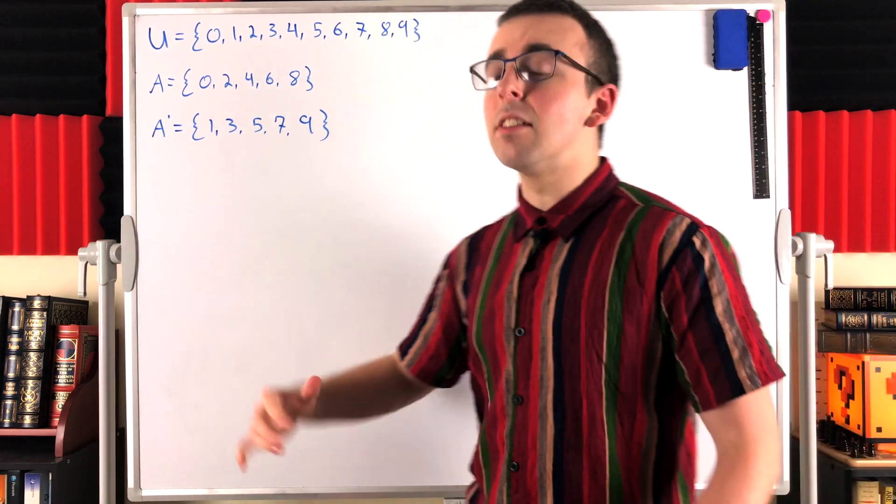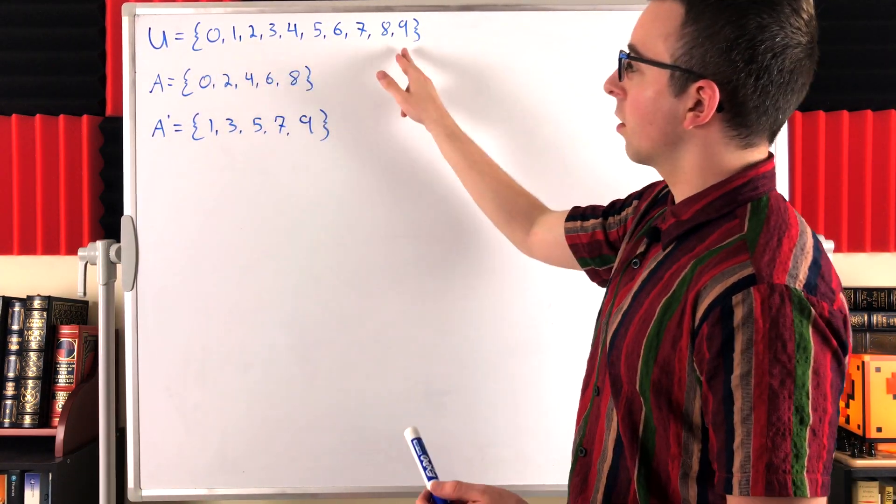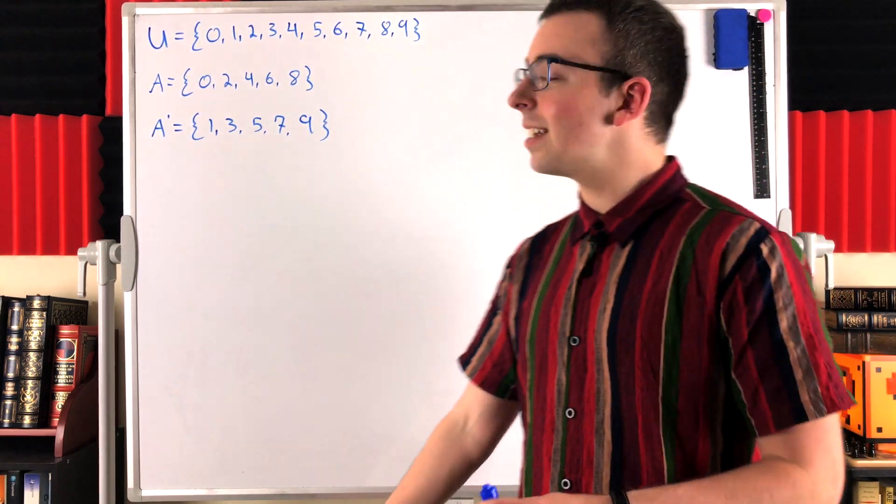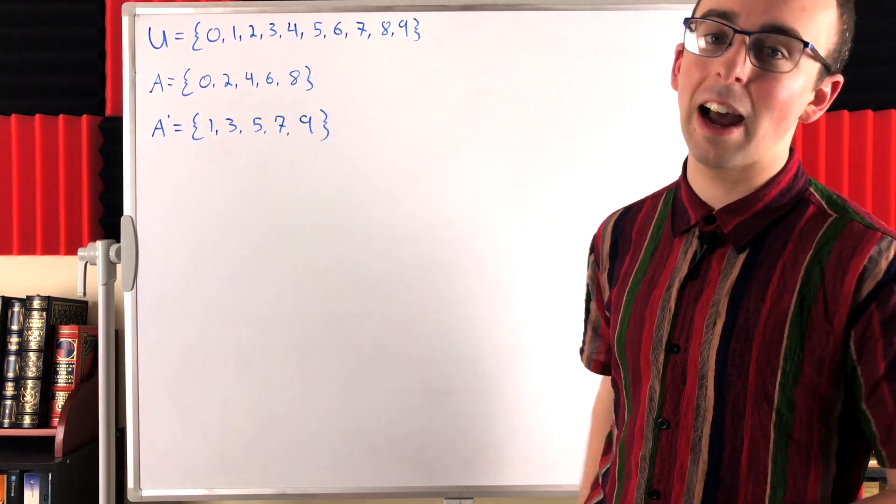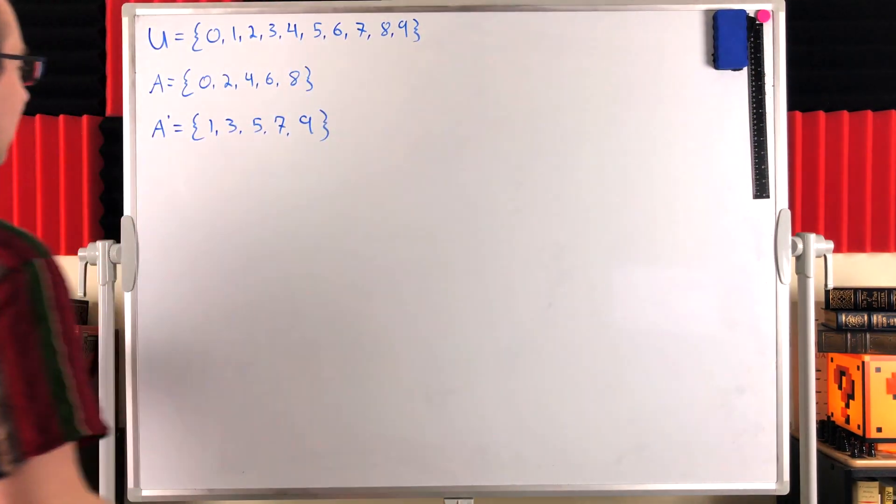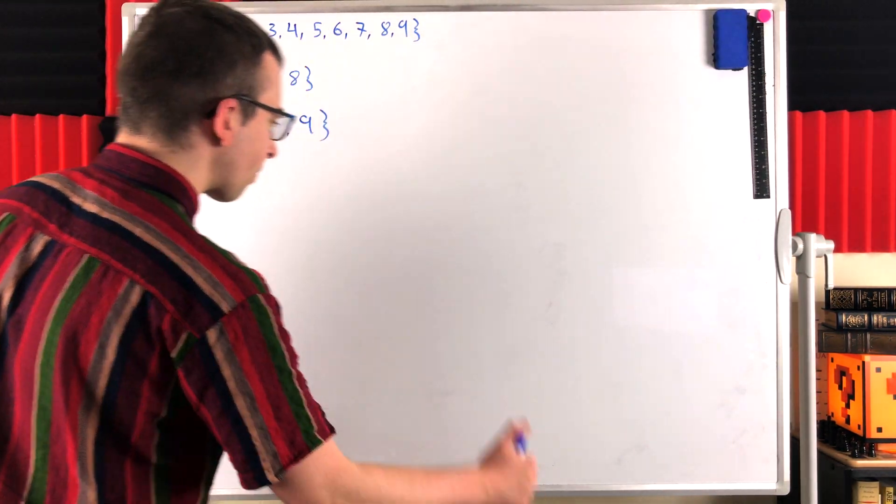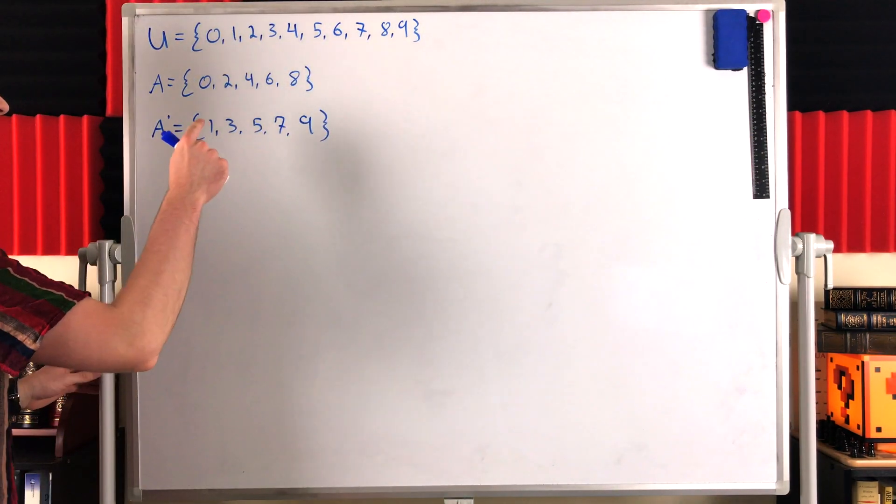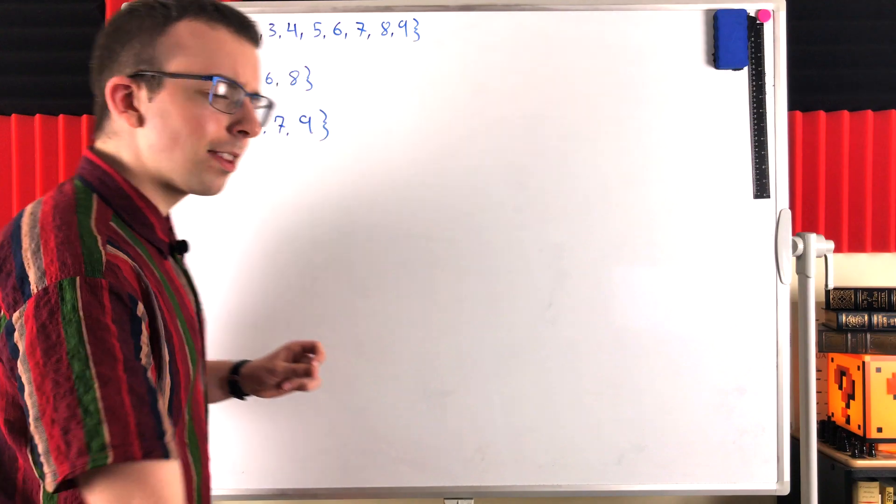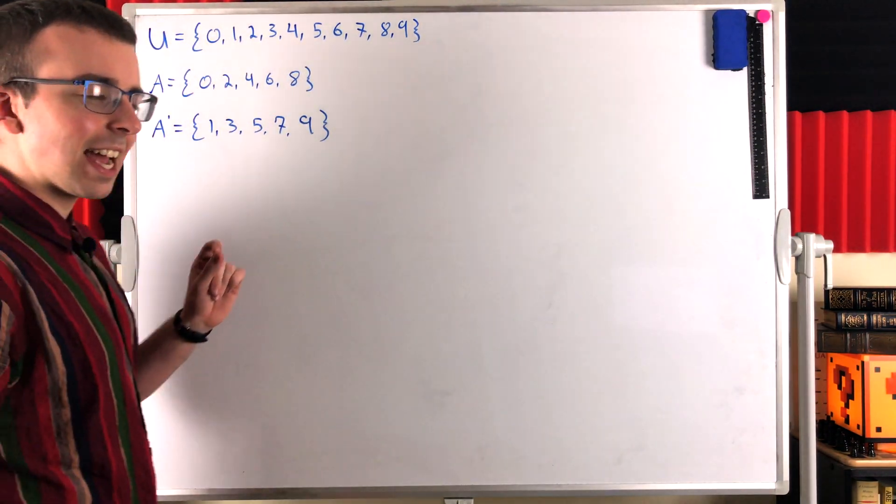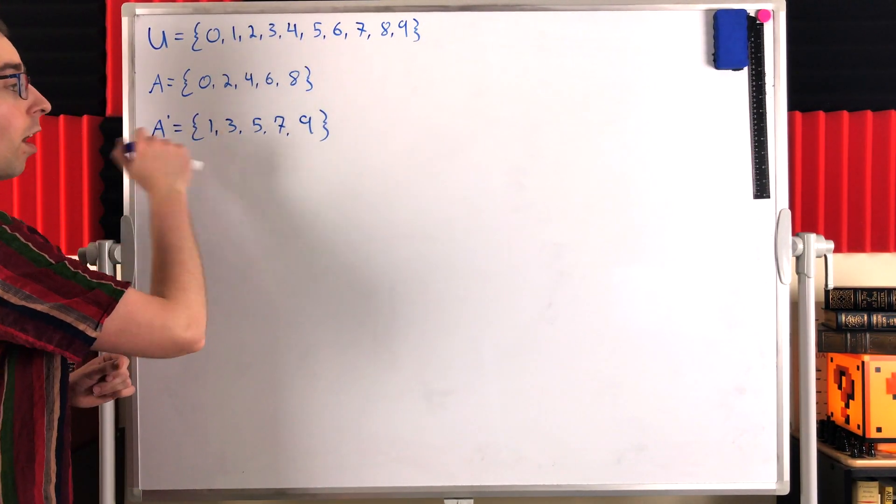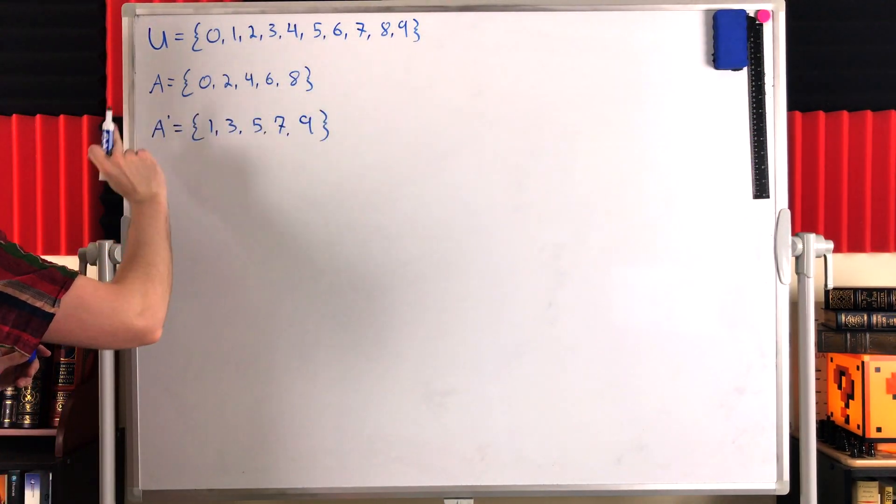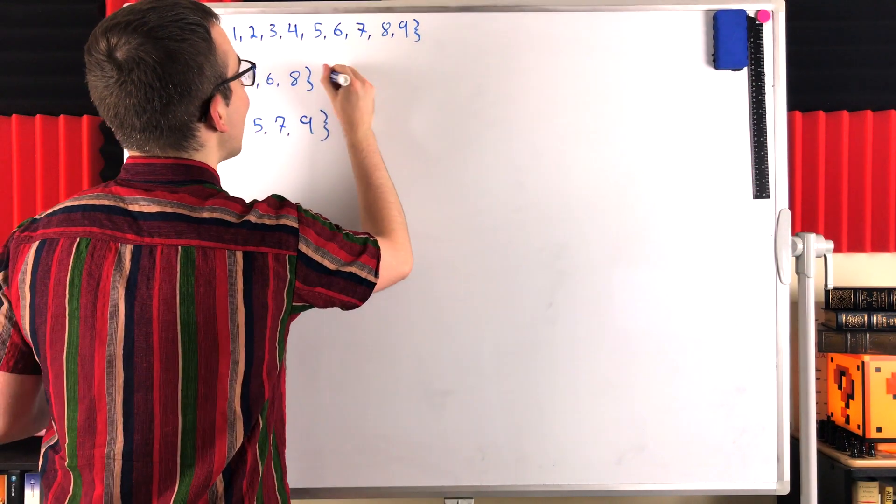The complement of A contains all elements in the universal set that are not in A. So in this case, A complement contains the odd numbers 1, 3, 5, 7, 9. So what are we going to get if we take the complement of A complement? Well, the complement of A complement contains the elements not in A complement, which means the complement of A complement contains the elements that are not odd, which means it contains the even elements, which means it is A. The complement of the complement of A is A.